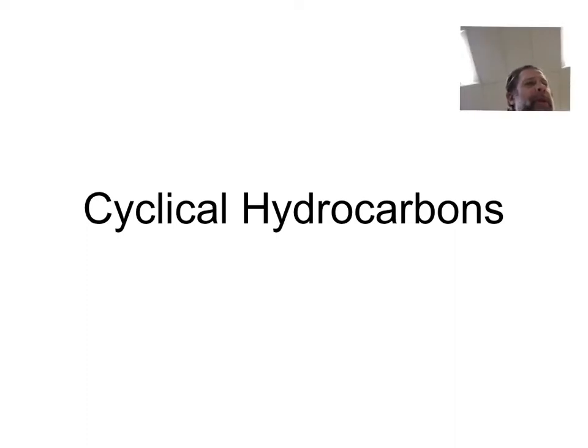Another type of hydrocarbon nomenclature that we need to be responsible for understanding is when we talk about cyclical hydrocarbons. The fact that it has the prefix cyclo and makes up being a circle means these are hydrocarbons that tend to form some type of a ring.